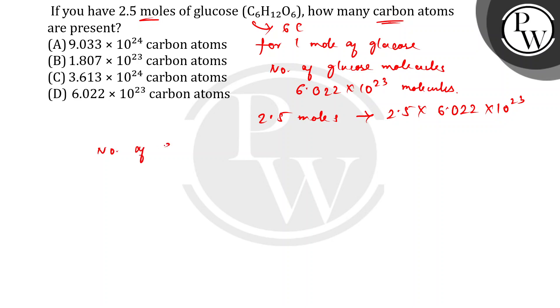Number of carbon atoms in 2.5 moles of glucose is simply 2.5 multiplied by 6.022 × 10²³ × 6, which will be 90.33 × 10²³.